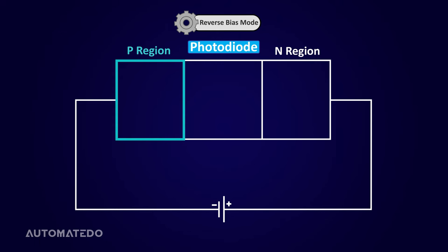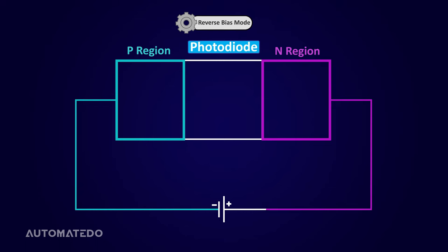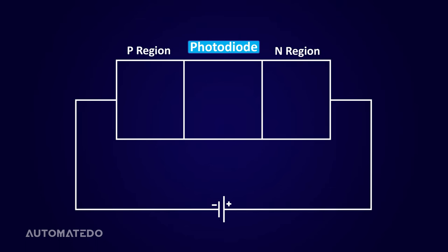It means the P side of a photodiode is linked to the power supply's negative terminal while the N side is connected to the positive terminal of the power supply. Since photodiodes are a class of diodes, we will begin by discussing the PN junction. As mentioned before, it has two terminals, anode and cathode.